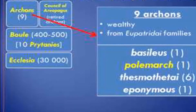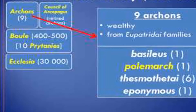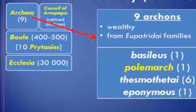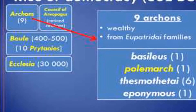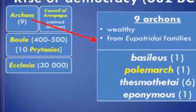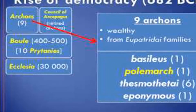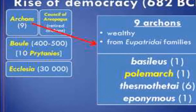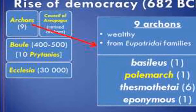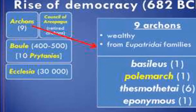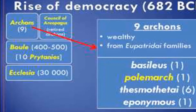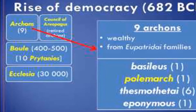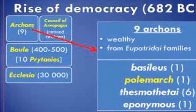Cleisthenes' system, the first democracy, consisted of three bodies. The Ecclesia wrote laws and policies. The Boule was a citizen's council, and the Dicasteria were the civil law courts.